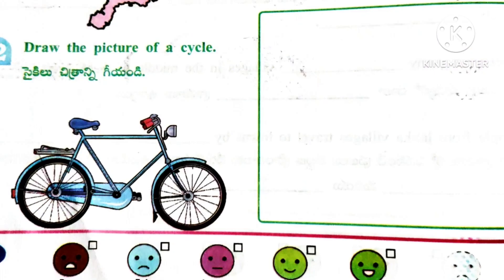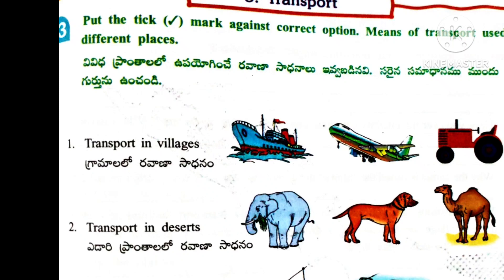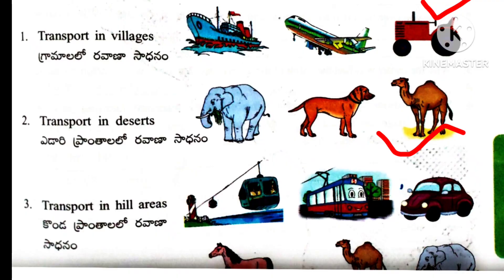Next: draw the picture of a cycle — here already given a picture of cycle. Means of transport used in different places: 1st one — transport in villages — here given three different pictures, the correct one is tractor. Question number 2 — transport in desert — correct answer is camel. Question number 3 — transport in hilly areas — answer is the first picture: Ropeway.